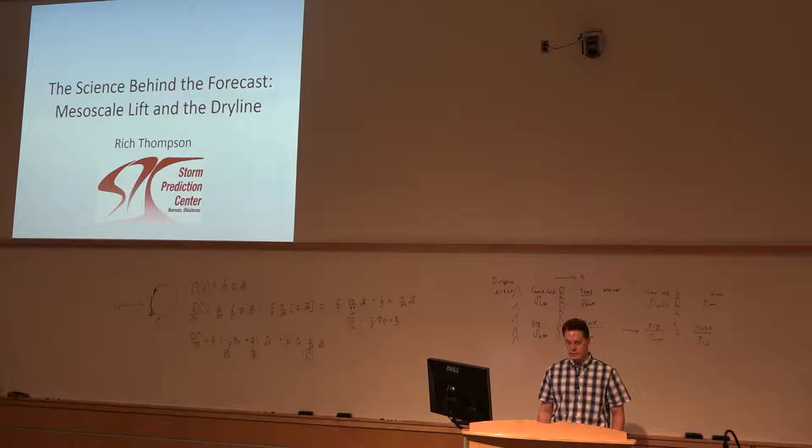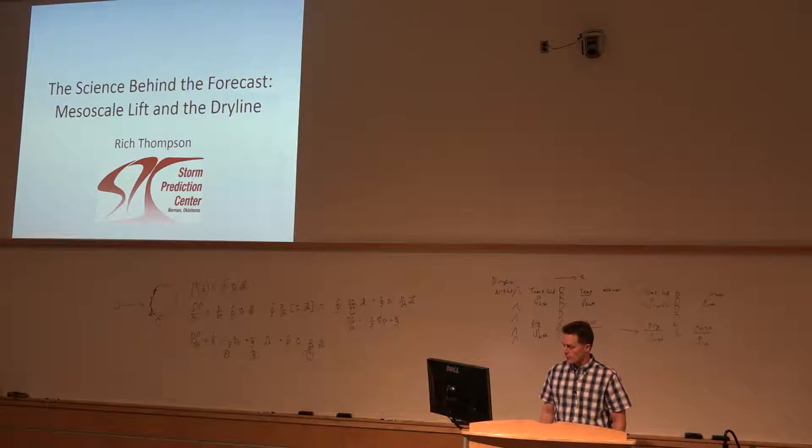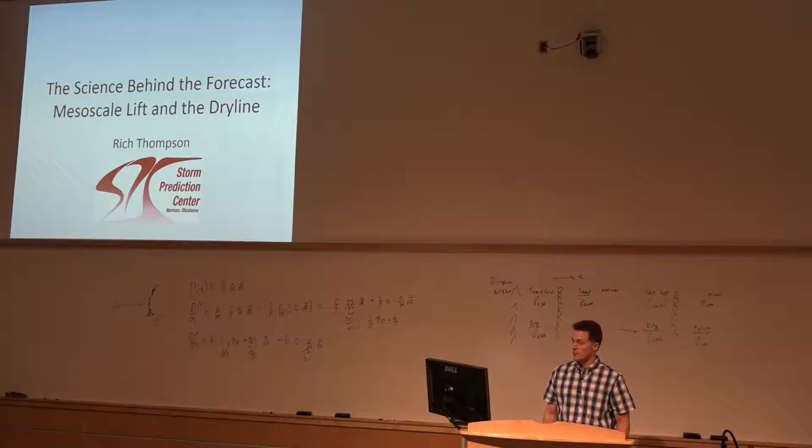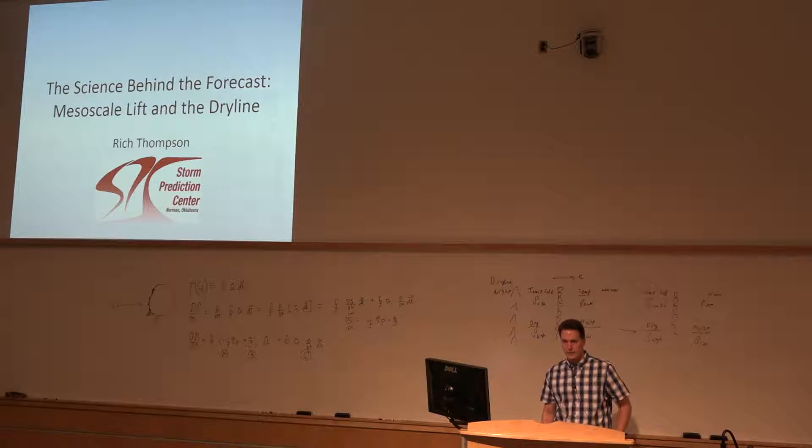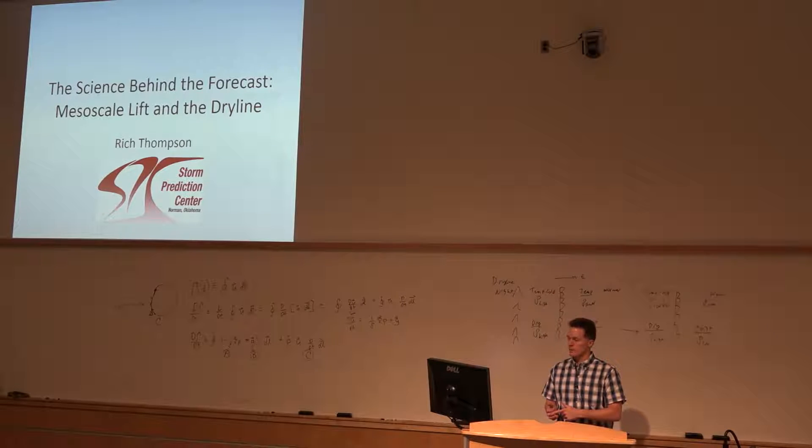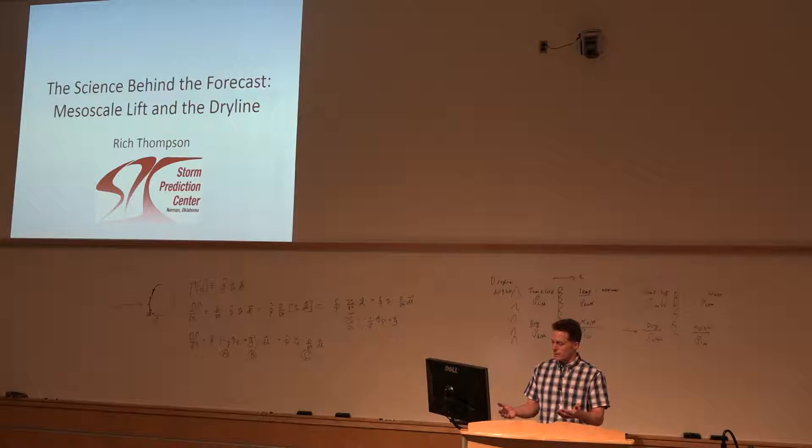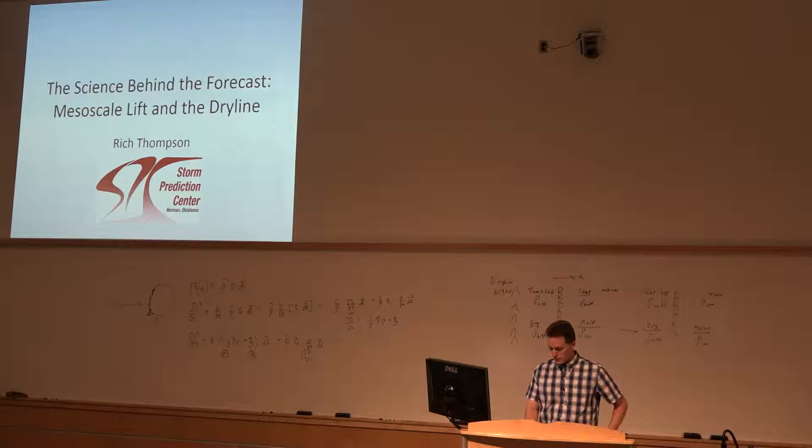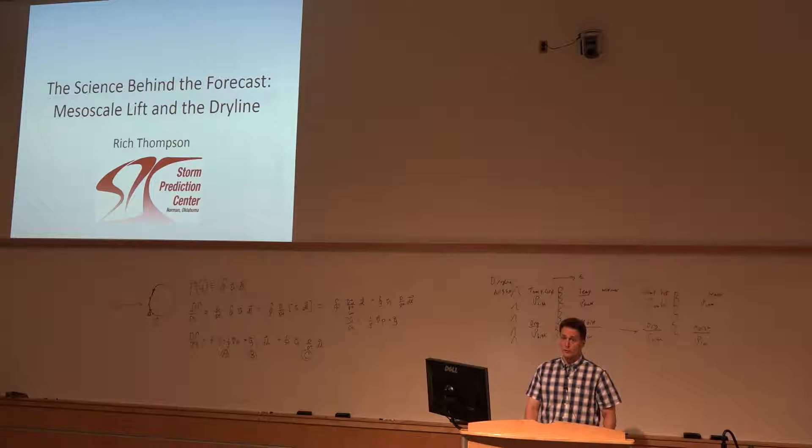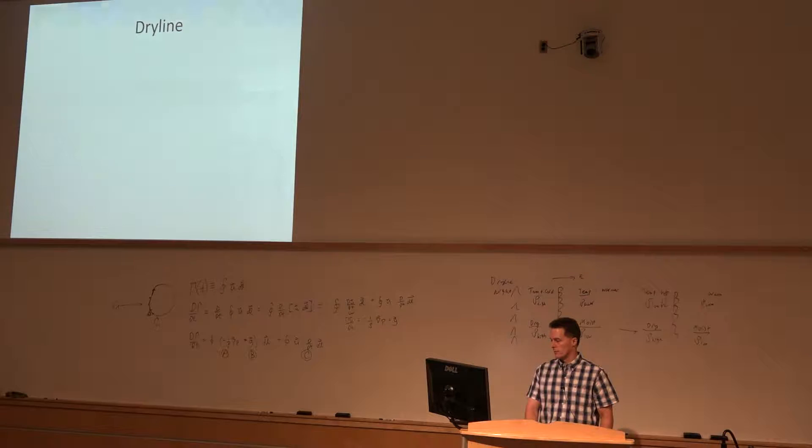Okay, we're going to talk about the dry line today. We're going to look at the source of mesoscale lift along the moisture gradient that's typical of the Great Plains, especially in the spring months, and look at how we can, in a qualitative sense, try to answer the question whether or not storms are going to form in that zone of ascent on the dry line.